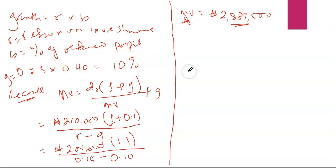The market value we obtain is two million eight hundred and eighty-seven thousand five hundred (2,887,500). This is the market value for Delta, because Delta has growth — Delta retains 40 percent of its earnings for growth. That is why we use this dividend growth model formula. For Binny, we use a different approach because Binny has no growth.